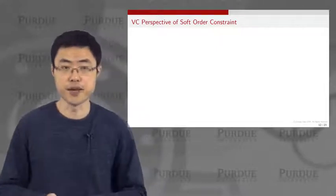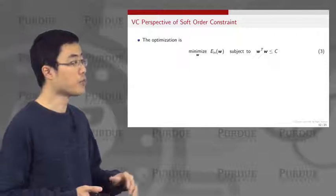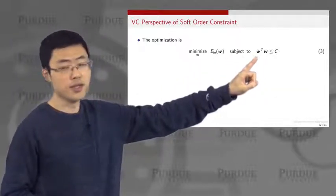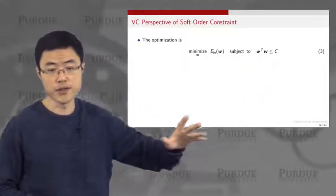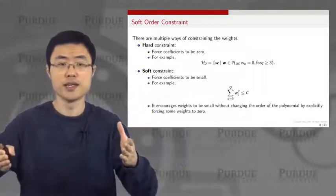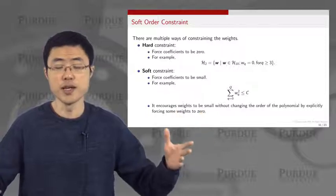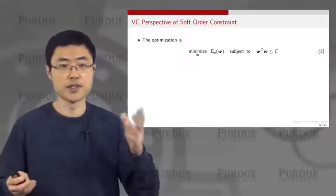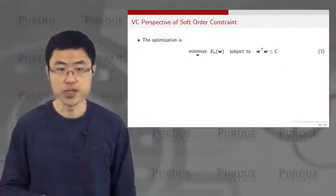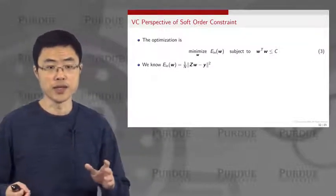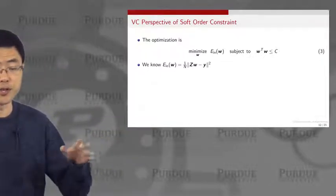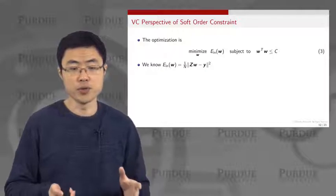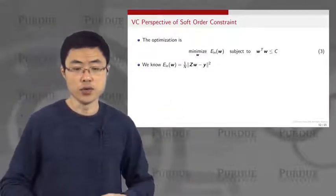From the VC perspective, the optimization problem is: minimize the training error subject to w-transpose w being less than or equal to c. The in-sample error is written as (1/n) times the 2-norm squared of (Z·w minus y), where Z is the transformed input matrix and y is the label vector. This is the constrained minimization problem.